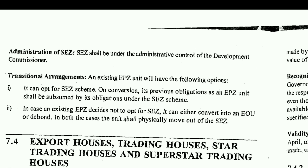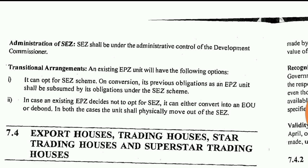In case an existing EPZ decides not to opt for SEZ status, it can either convert into an EOU (Export Oriented Unit) or be de-bonded, or its operation can be discontinued. In both cases, the unit shall physically move out of the SEZ.